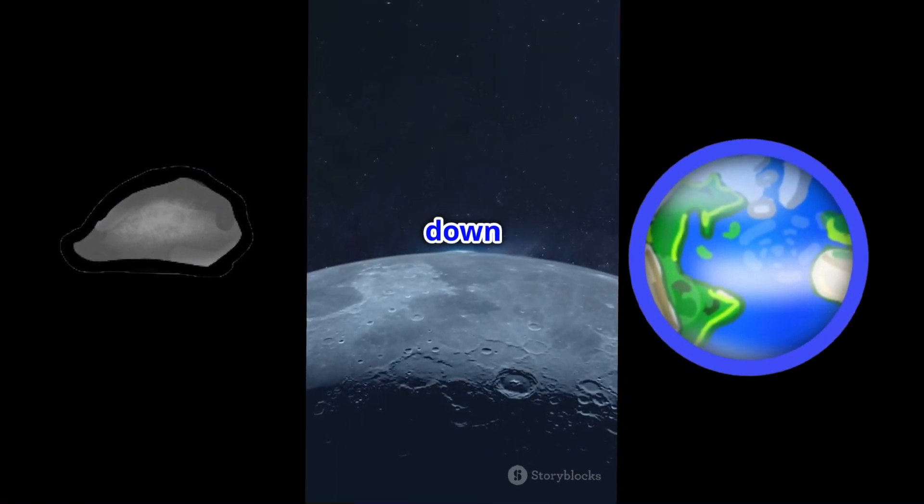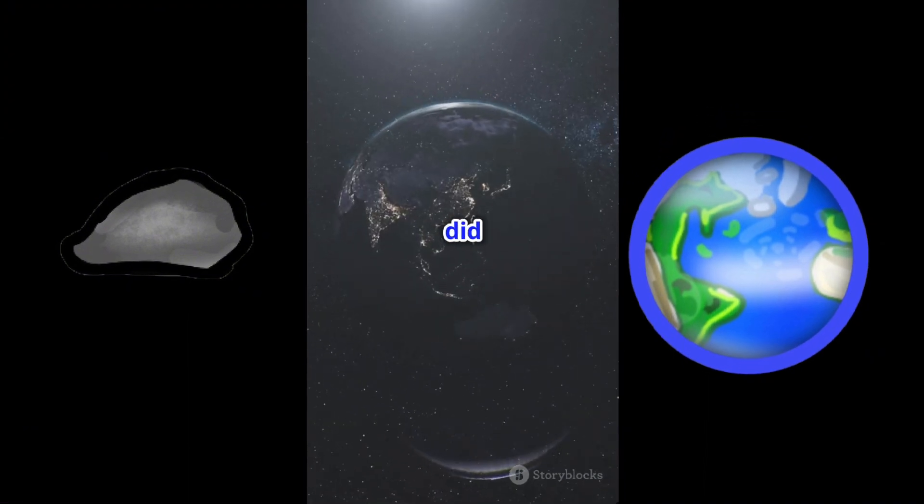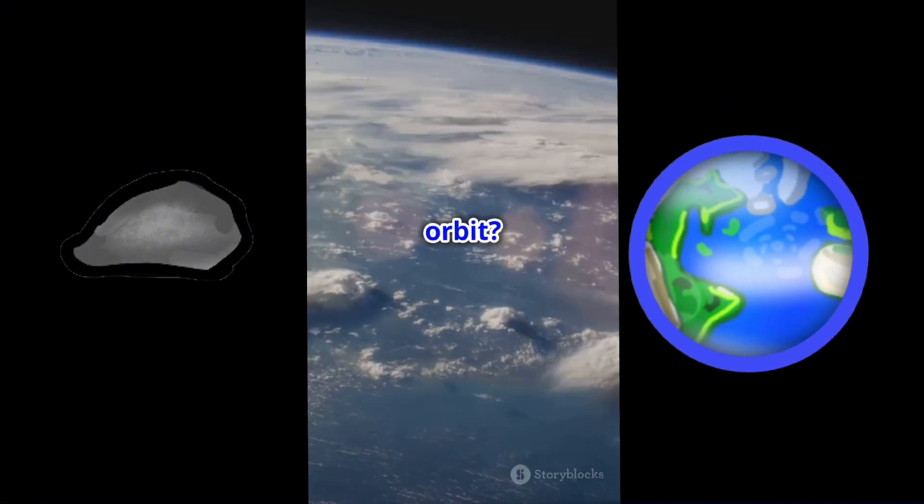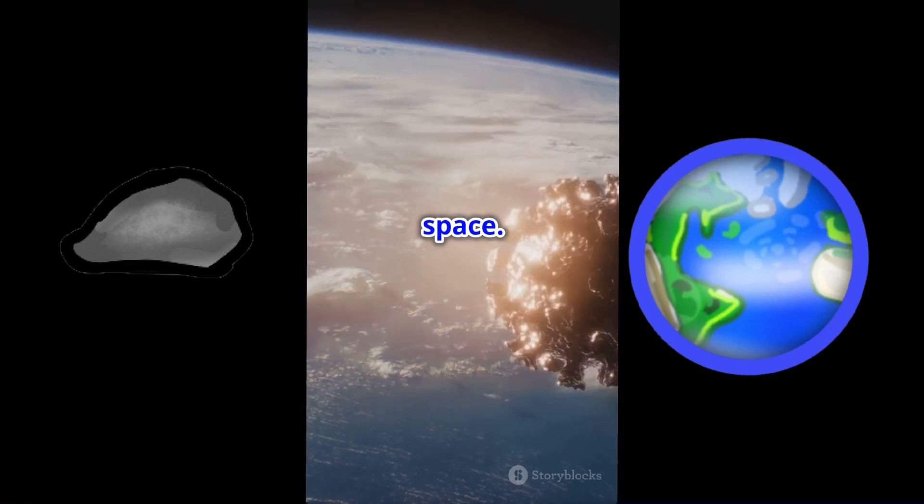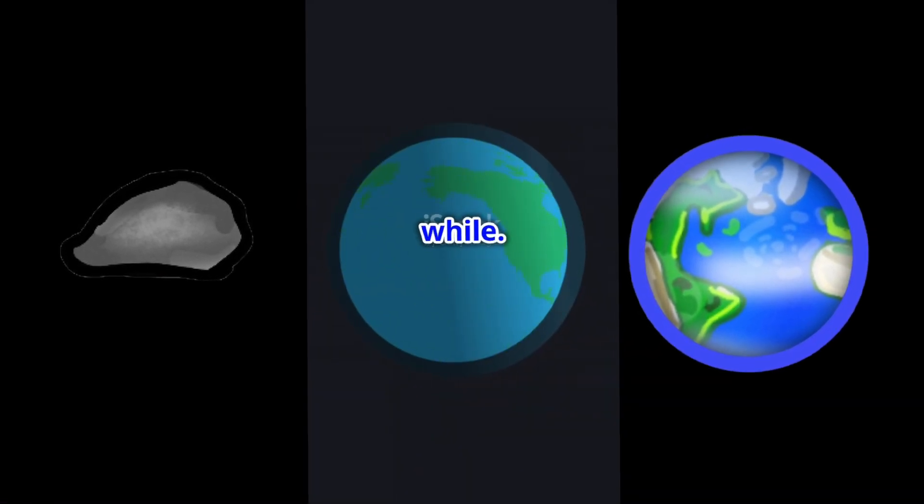But don't worry, it's not crashing down anytime soon. So how did this little guy end up in Earth's orbit? Scientists think it got captured by our planet's gravity as it zoomed through space. Now it's spinning around us, keeping us company for a while.